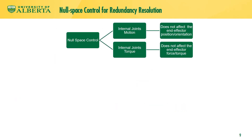Kinematic redundancy can be resolved to meet different objectives. These objectives usually lead to either velocity control or torque control of the joints. At the velocity level, null space control reconfigures the internal motion of the joints of a redundant robot without affecting the position and orientation of the end effector. At the torque level, null space control changes the torque vector applied at the joints of the redundant haptic interface without affecting the end effector force or torque.